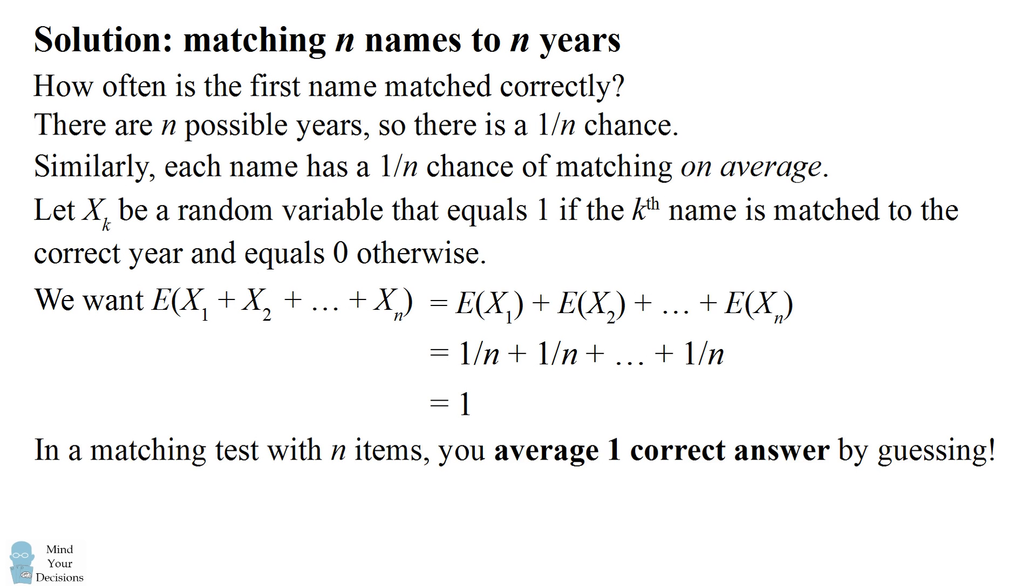So this is a really interesting fact because it doesn't matter if the test has two items or if the test has a million items. You're going to average one if you guess randomly. Furthermore, we've gone over that there are different ways that you could guess randomly on this test. And this is going to be the same average.